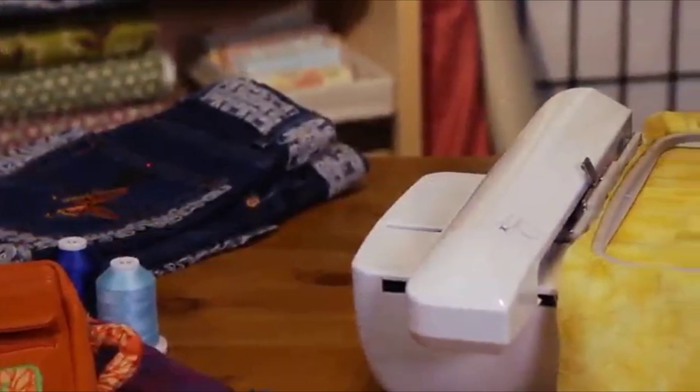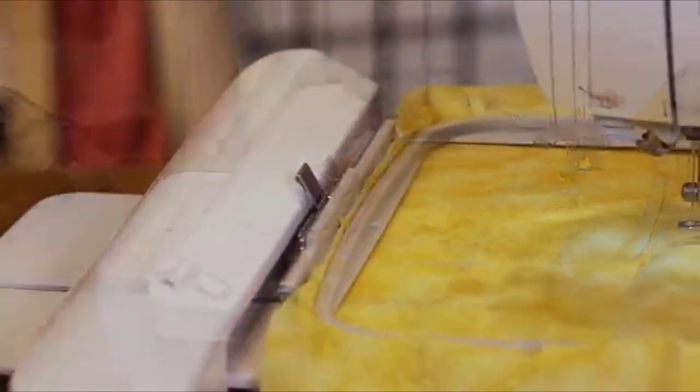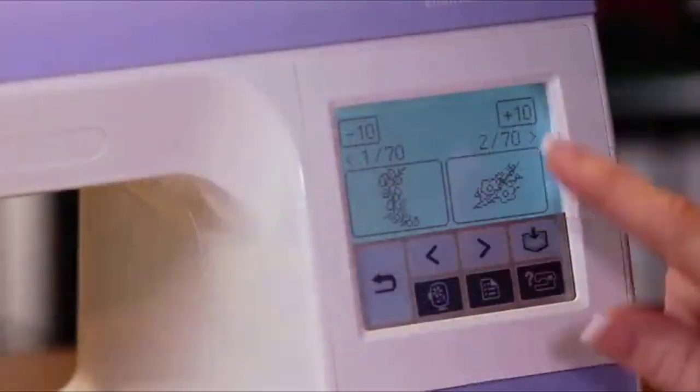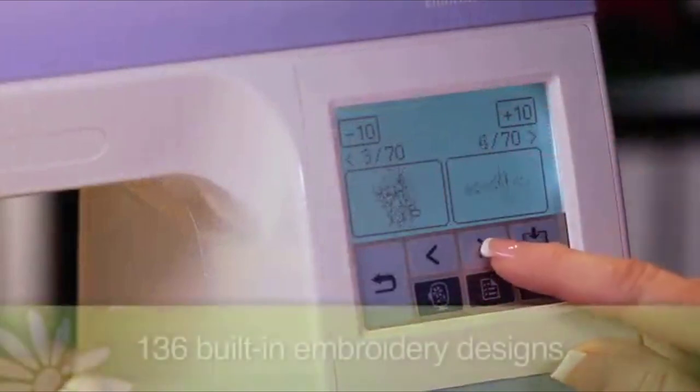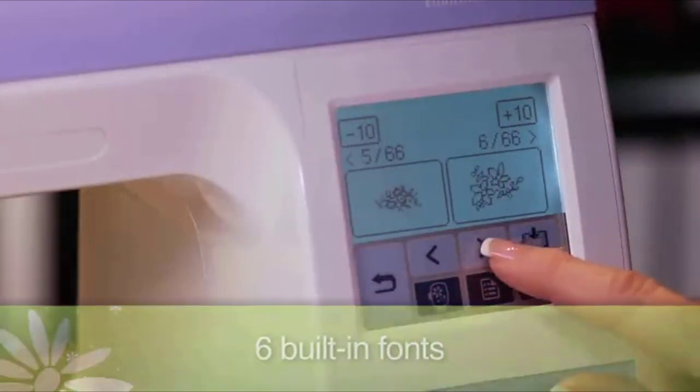First, the PE-770 has a large 5x7 embroidery area, which allows you to express your creative vision on larger items like tote bags. And you'll want to get expressive when you see the machine's assortment of 136 built-in embroidery designs, 10 built-in frame designs, and 6 built-in fonts.